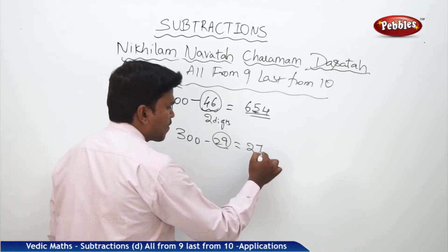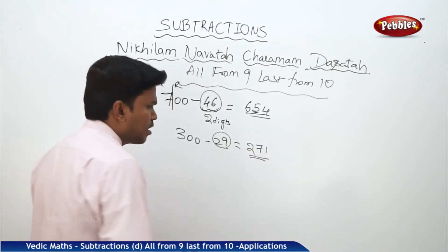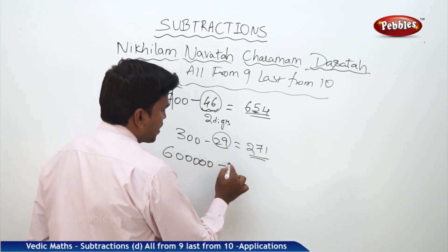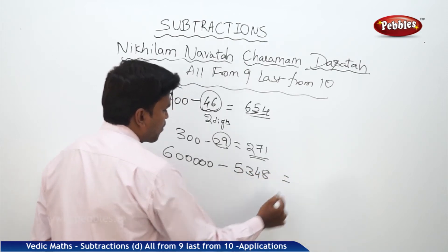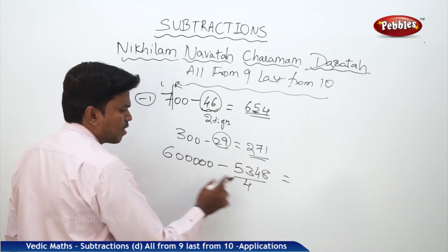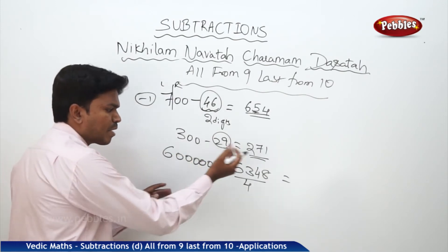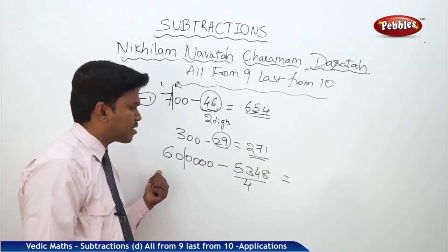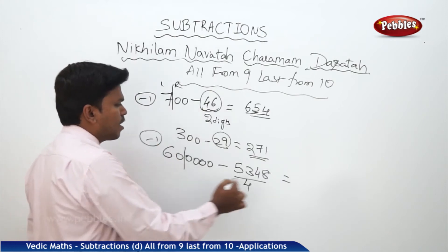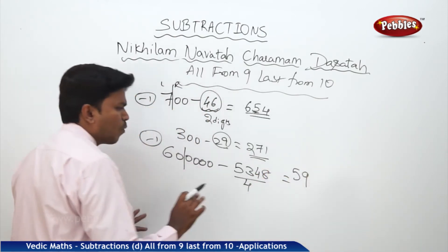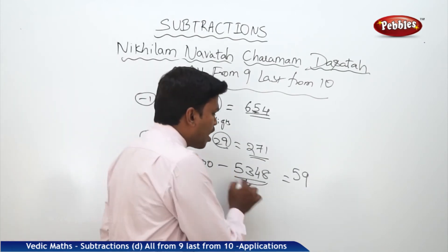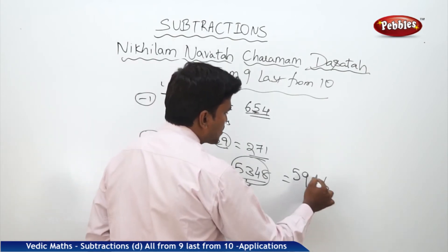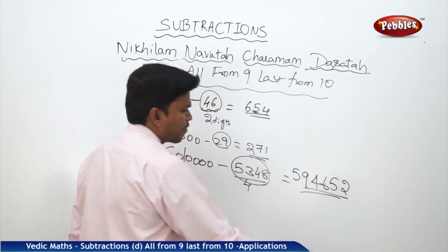Now, 6 lakhs minus 5348. How many digits are there in the subtrahend? Four digits. Start partition from the right side — 1, 2, 3, 4 — make a partition. The left side number is 60. If 60 is reduced by 1, you get 59. Now apply 'all from 9, last from 10' to the subtrahend 5348: for 5 it is 4, for 3 it is 6, for 4 it is 5 — and last digit from 10 gives 2. So the answer is 594652.